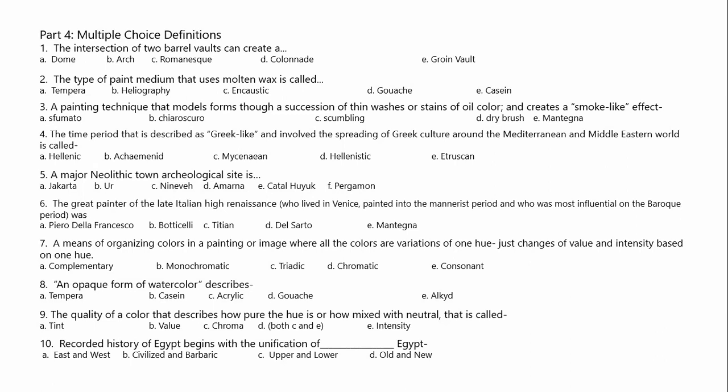Number ten: the recorded history of Egypt begins with the unification of Upper and Lower Egypt. Some of you will notice when you get your test back that I didn't take full points off necessarily, depending on which answers you put down. For example, if on number four you put A, Hellenic, you wouldn't have gotten full points off — you would have gotten partial credit.